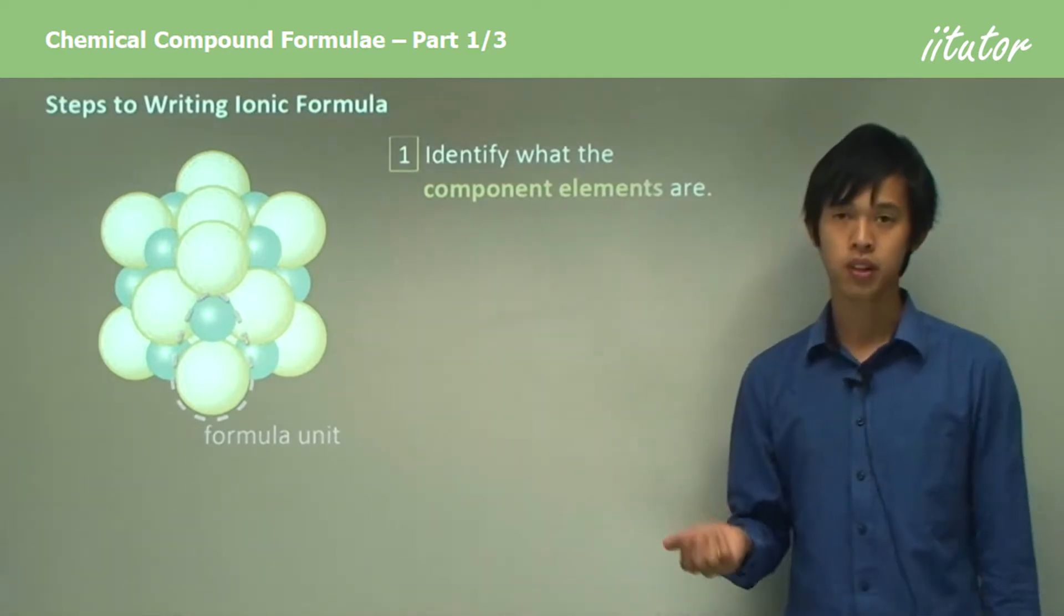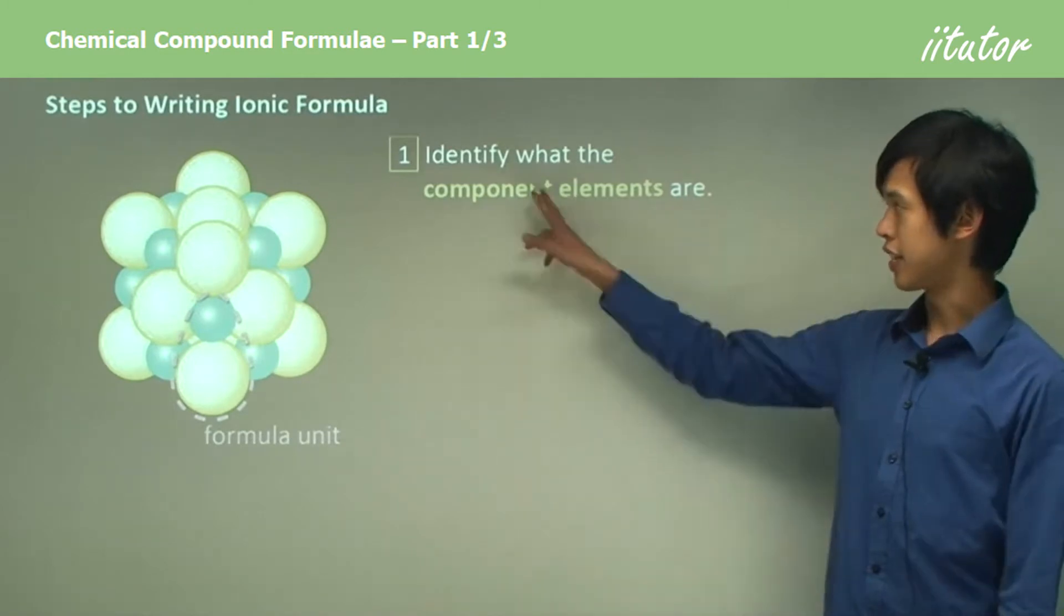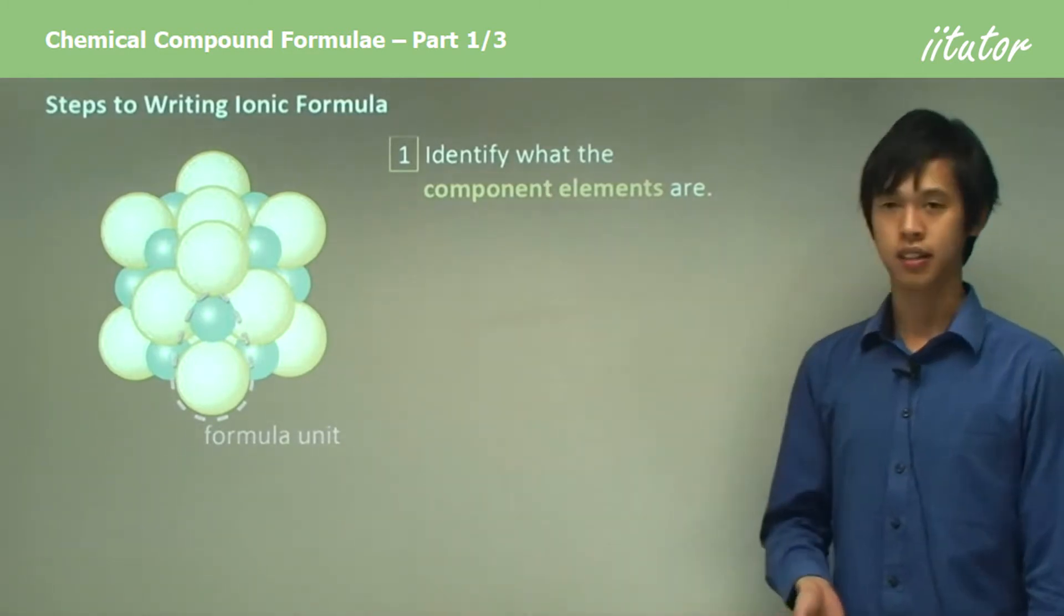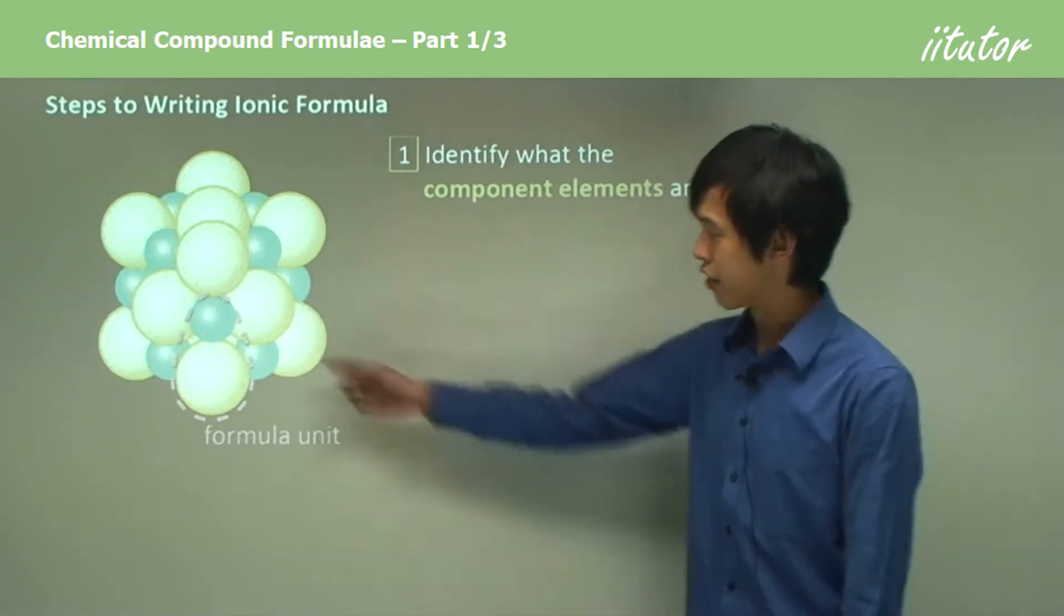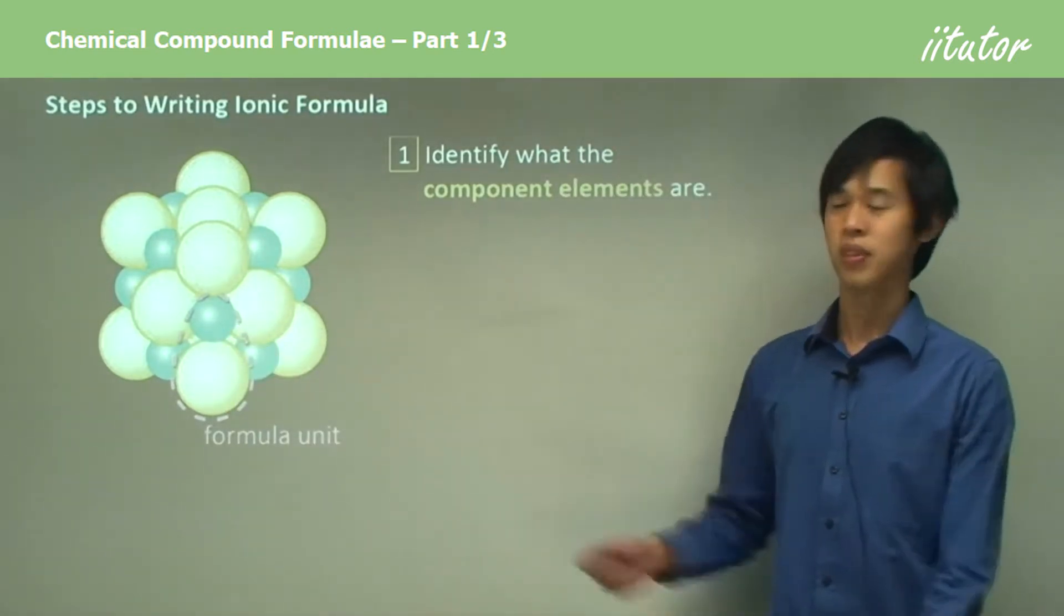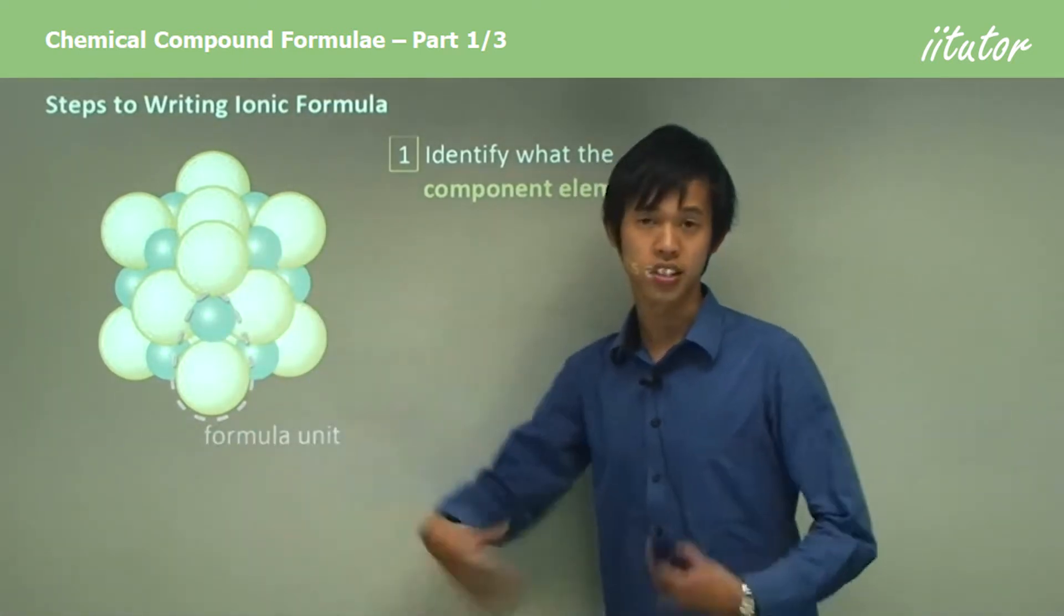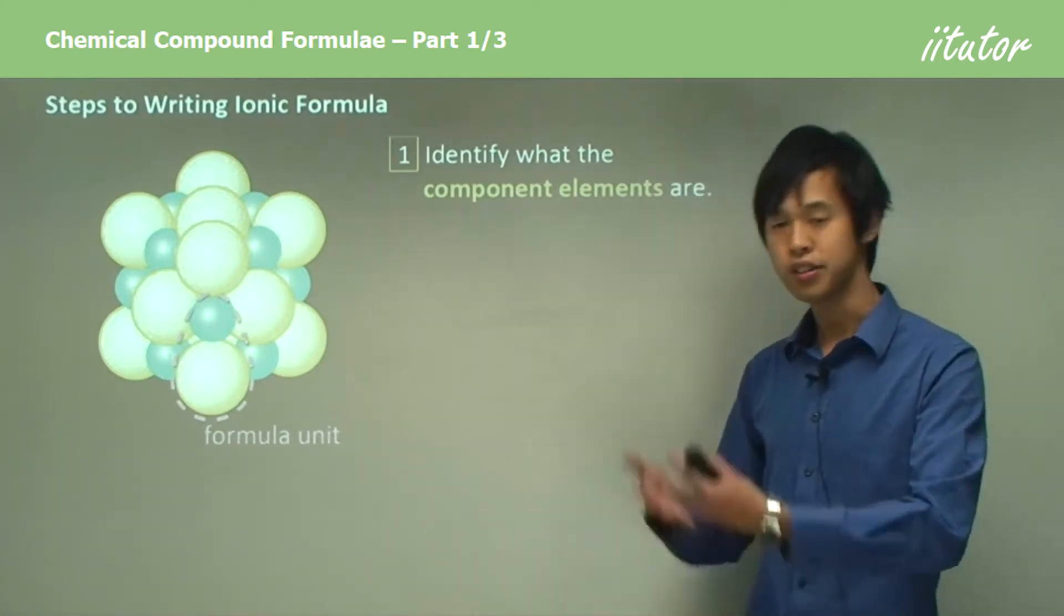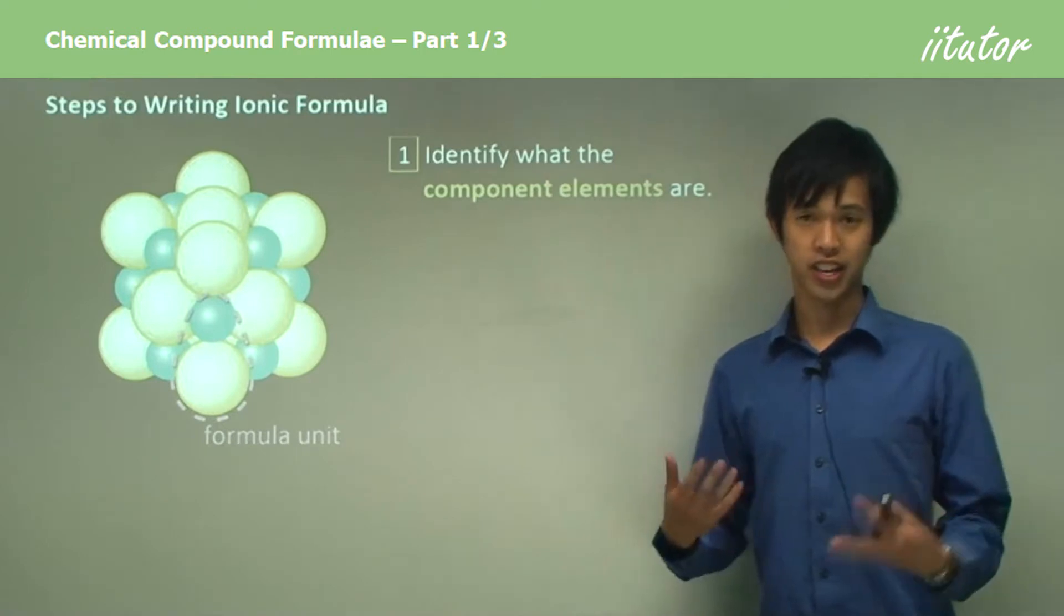Firstly, you have to identify what the component elements are. If yellow was, say, chlorine and green was, say, sodium - they should actually be the other way around, but let's just go with that for argument's sake - then we need to know what's there. So we know that it's chlorine and sodium, yes, that's the first step. Just identifying what we actually have in the actual compound. This is the easy one.